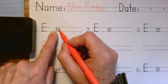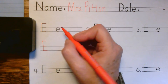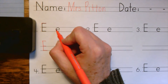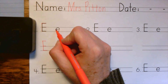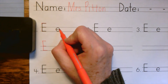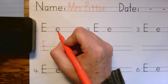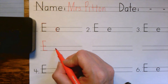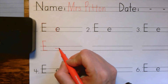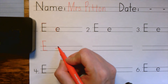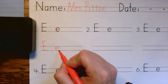Now lowercase e — do you remember how we do this? We think about baseball. Put your pencil right here, hit the ball, run the bases and touch every base. Come down here. Remember, we want to go about the middle of these lines, a little bit above the middle. Hit the ball, run the bases.